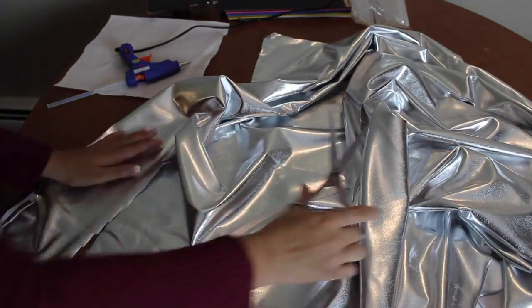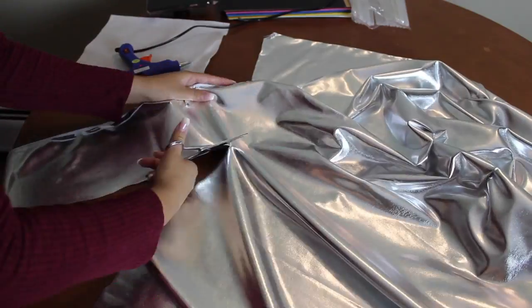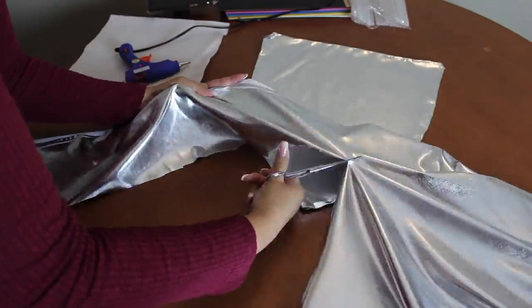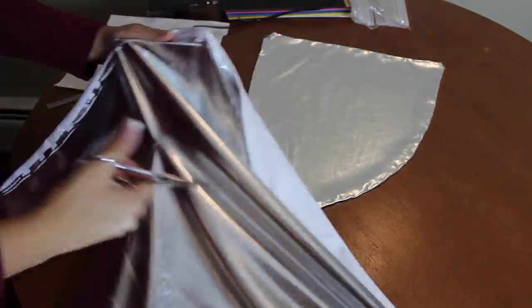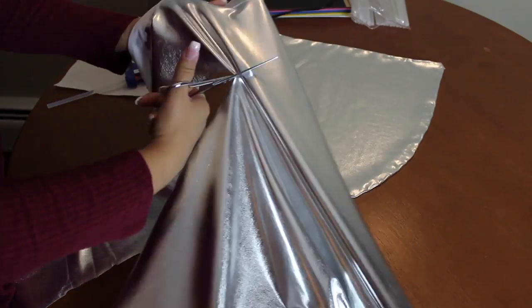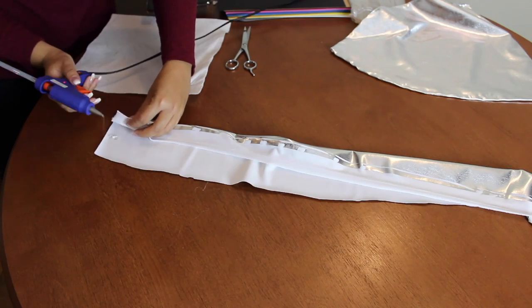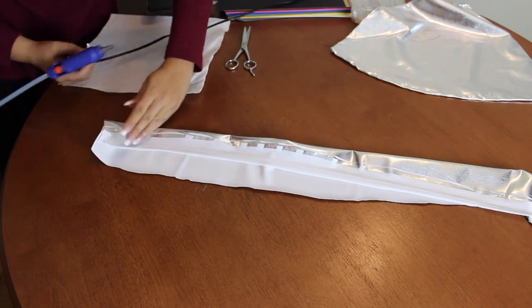Next step is to grab a longer piece of fabric. Off-screen, I measured it against myself to make sure I could tie it around my waist. Then I cut straight across to create the belt of the apron. We're going to be folding them in on themselves, so first you grab one side, fold it in, and start gluing.